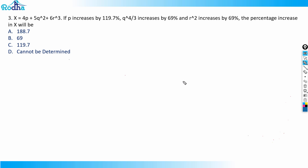Now, a common doubt in this kind of question is whether the answer will be 'Cannot Be Determined.' Let's first understand which questions will have CBD as the answer. For example, consider an equation like x = a + b + c.